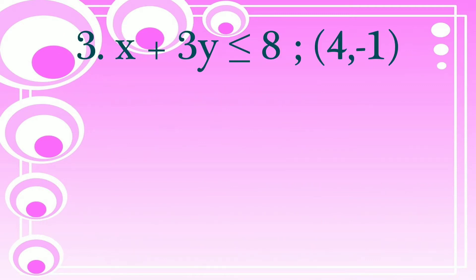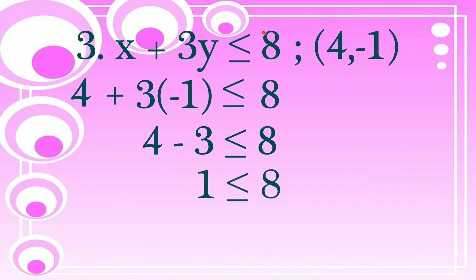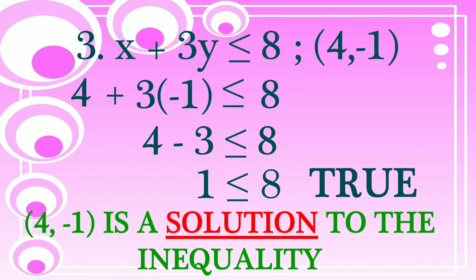Let's try another one. Number 3: x plus 3y is less than or equal to 8, and our ordered pair is (4, negative 1). Let's test if (4, negative 1) is a solution. Our x value is 4 and our y value is negative 1. Substituting into the inequality: 3 times negative 1 equals negative 3, so 4 plus negative 3 equals 1. Is 1 less than or equal to 8? Yes, since 8 is greater than 1, it is true. Therefore, (4, negative 1) is a solution of x plus 3y is less than or equal to 8.